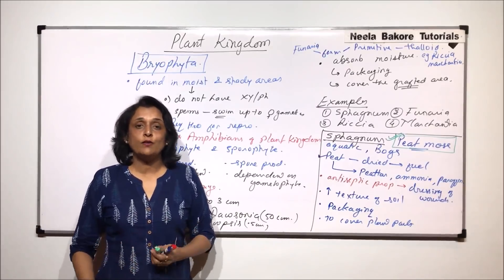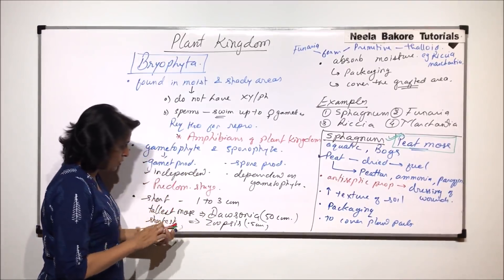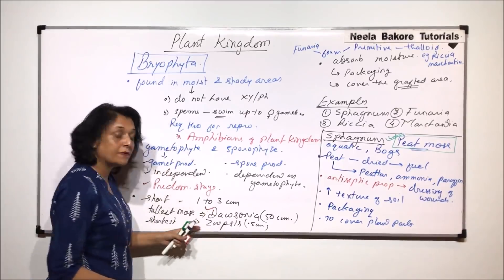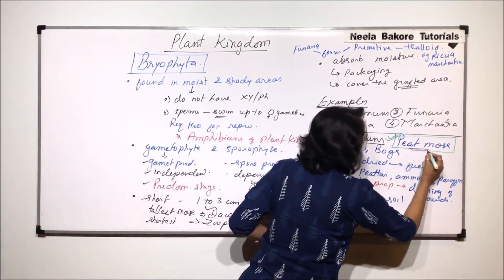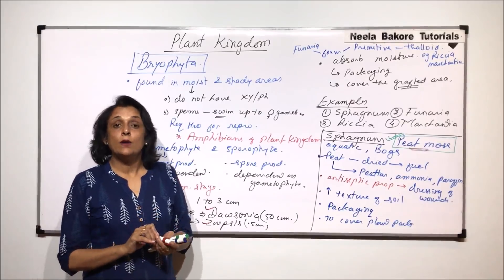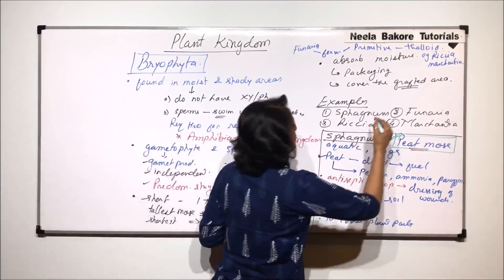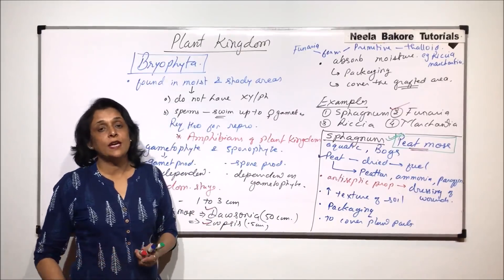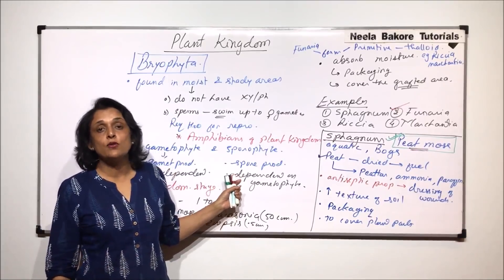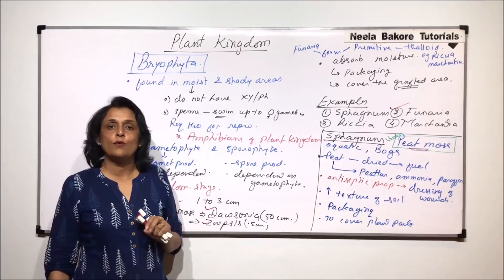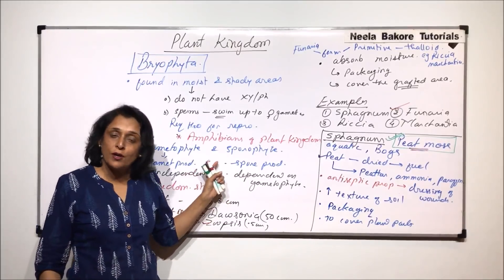In this introductory part of Bryophyta we covered several very important things. The tallest Bryophyte is Dawsonia, and the shortest is Zoopsis. The common name of Sphagnum is peat moss, which is very important to remember. In the next part, we will take up Funaria and discuss it in more detail, drawing the complete gametophyte and sporophyte and understanding the reproductive cycle — how these two forms alternate with each other.